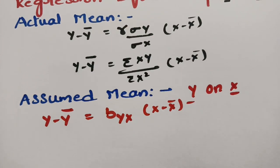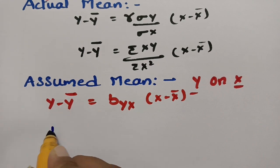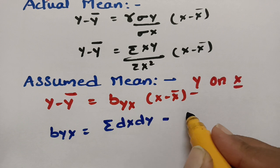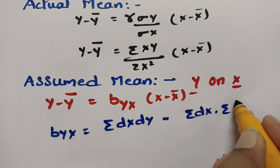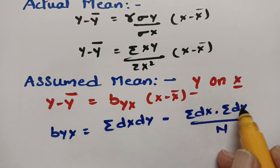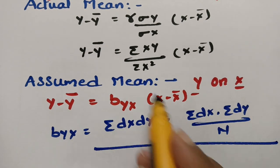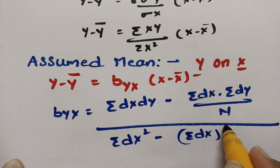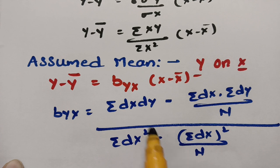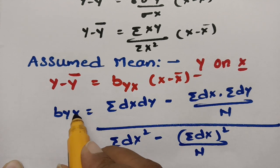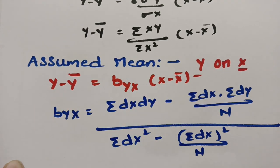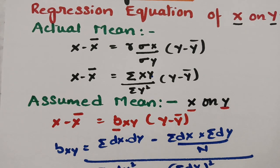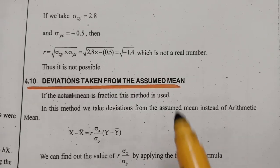What is the formula for byx? byx equals [Σ(dx·dy) minus (Σdx · Σdy)/n] divided by [Σdx² minus (Σdx)²/n]. This is the way to remember it. Now we are going to solve a problem related to the assumed mean — we assume a certain mean when the actual mean is a fraction.